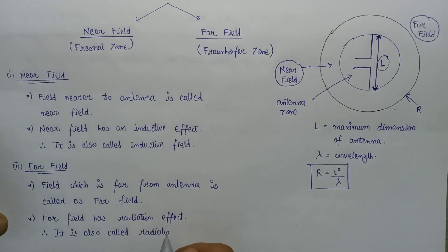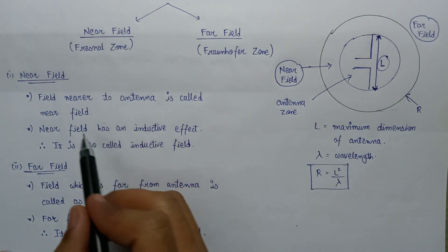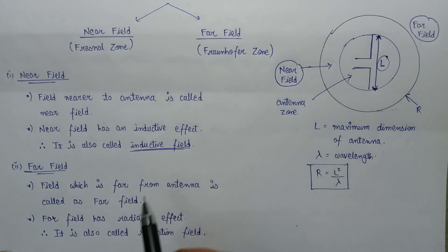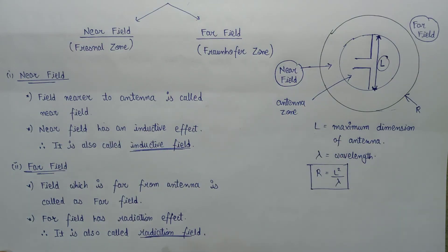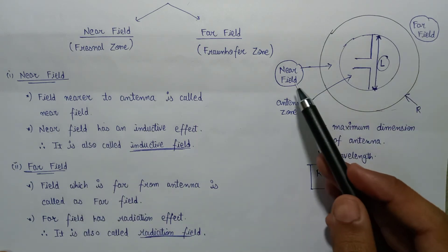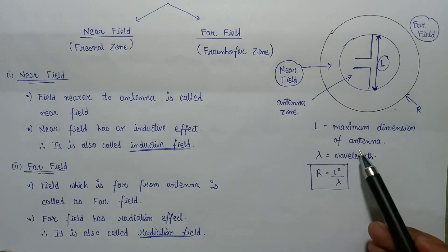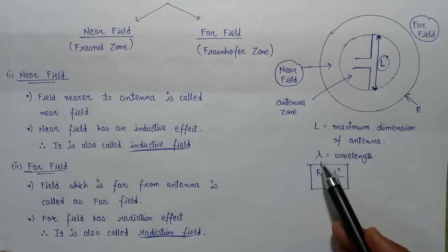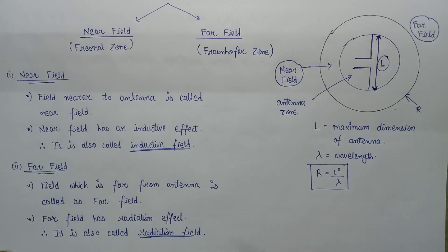So the near field is also known as the Fresnel zone and the inductive field. Similarly, the far field is also known as the Fraunhofer zone as well as the radiation field. There are two names for each field. This is the diagrammatic representation for the near field, far field, and the antenna zone based on the parameters: maximum dimension of antenna L, wavelength lambda, and the radius of the boundary given by L squared over lambda.